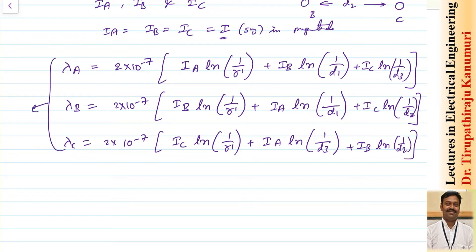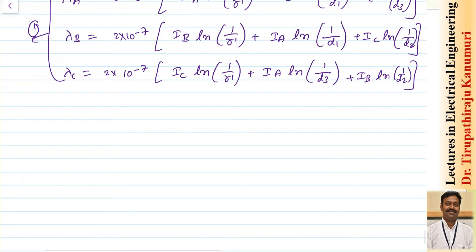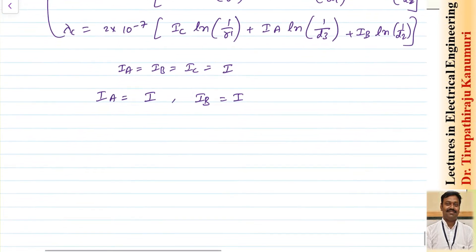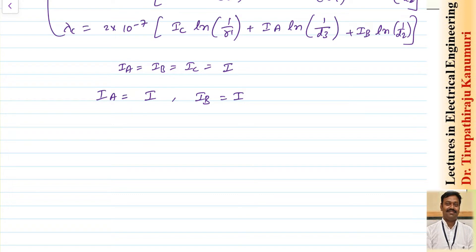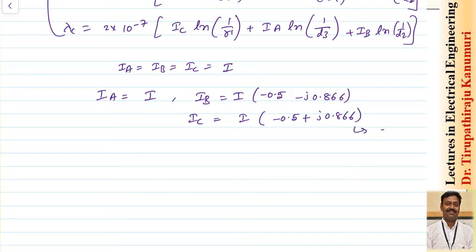If the system is balanced, ia = ib = ic = I in magnitude but displaced in phase. Taking ia = I as reference: ia = I, ib = I(cos120° − j·sin120°) = I(−0.5 − j·0.866), and ic = I(−0.5 + j·0.866). Let us take this as equation number two.